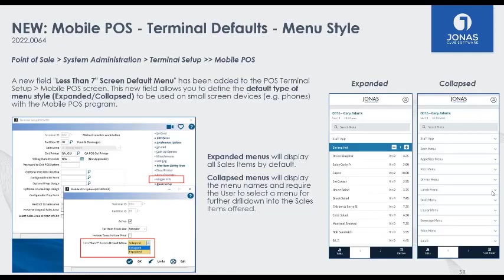The next feature is for the Mobile Point of Sale module. Your servers can use Jonas on their phones or a small tablet and walk around the club. The change we've made: when looking at your menus, you can have an expanded view showing all items on a particular menu, or a collapsed view showing just menu headers that you can expand further. Whichever is easier for your staff to navigate is completely up to you — there's also a search button available.